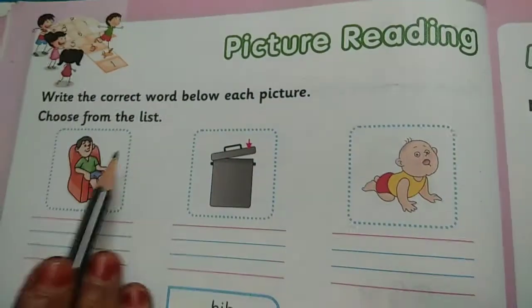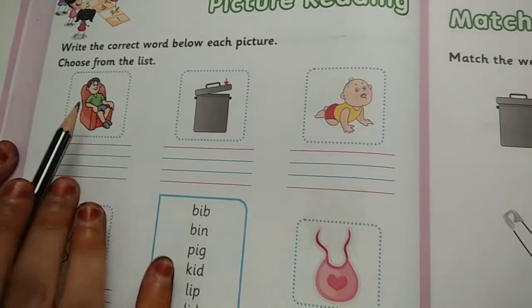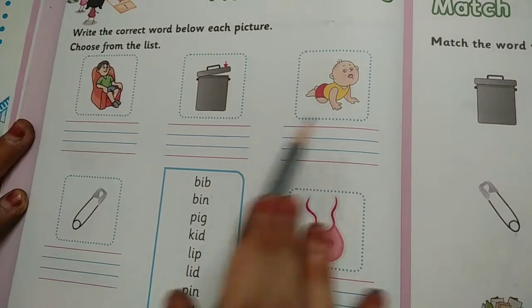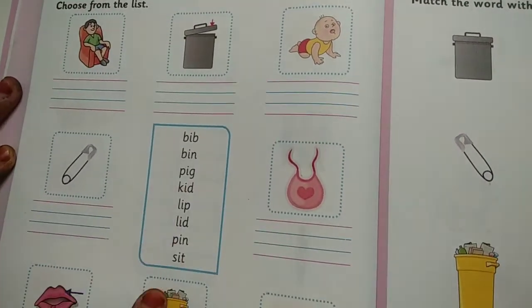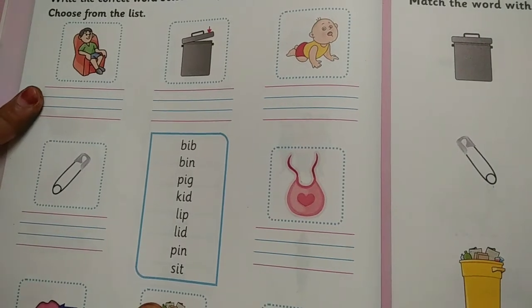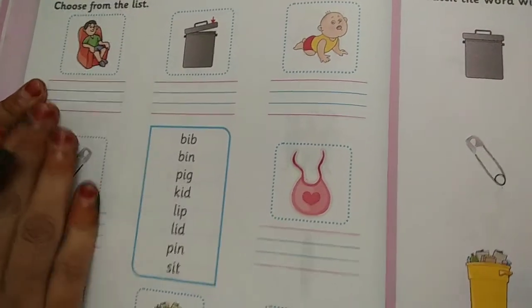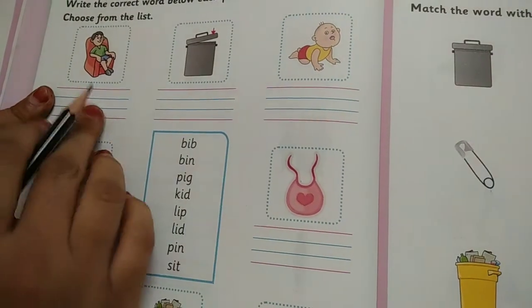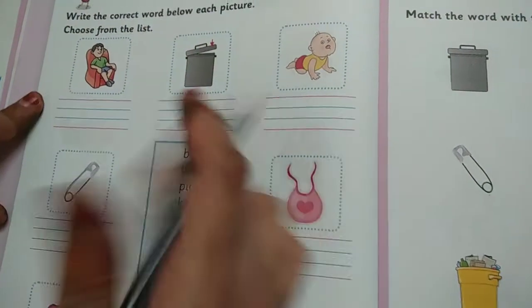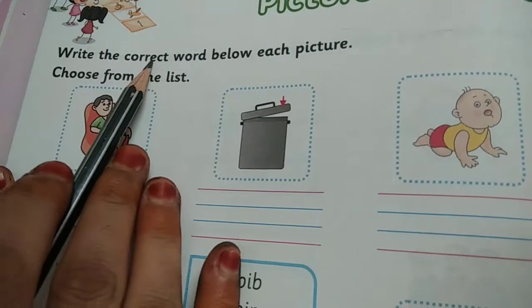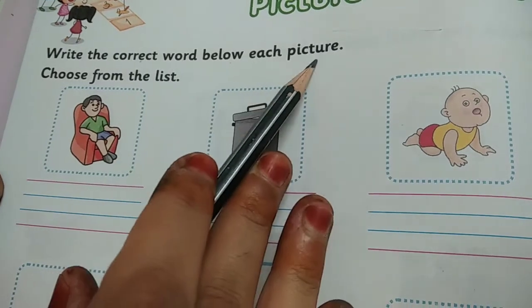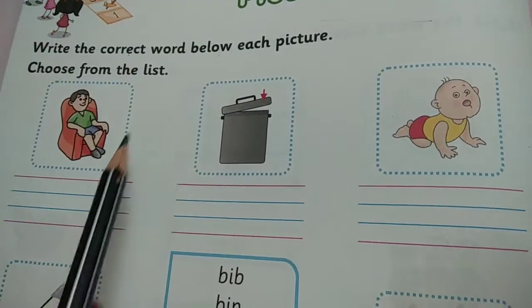Now this is also picture reading. That means pictures are given over here. You have to tell its name. And you will find the word from here. From this list. You have to write it here. So this is for homework. First one I will do for you. Write the correct word below each picture. Choose from this list.